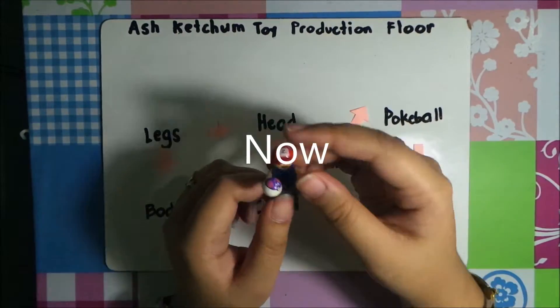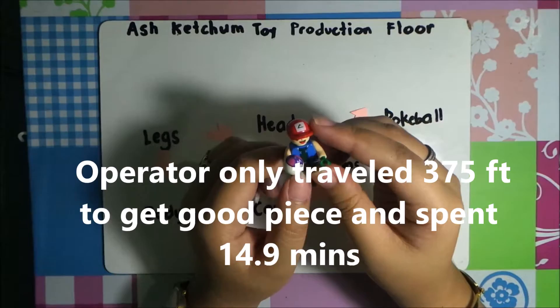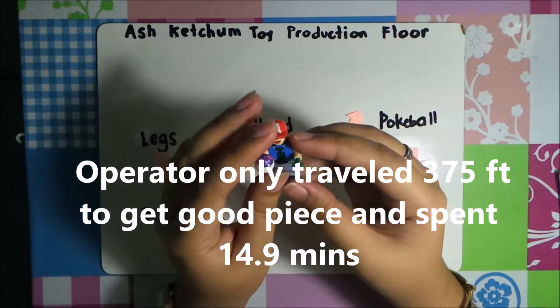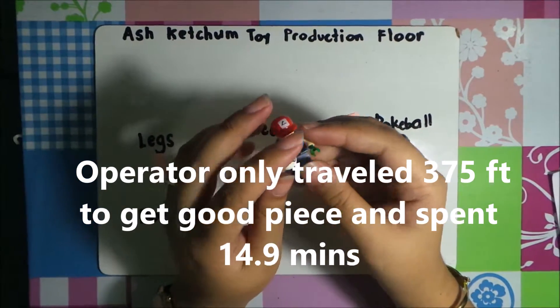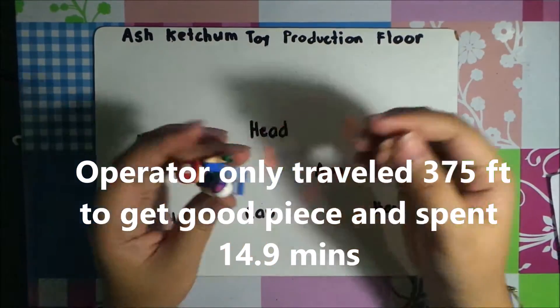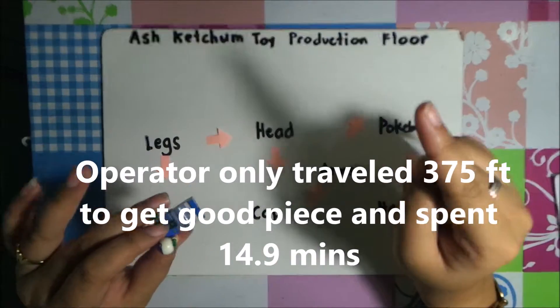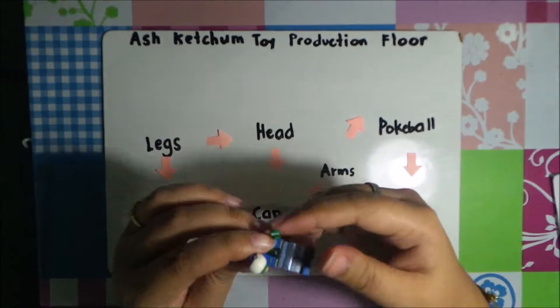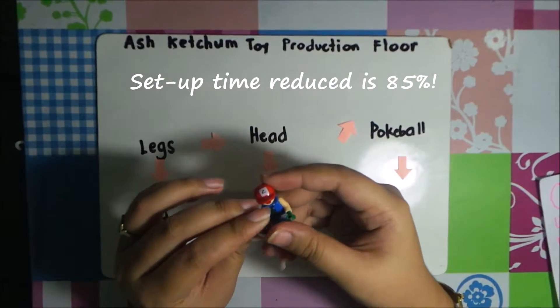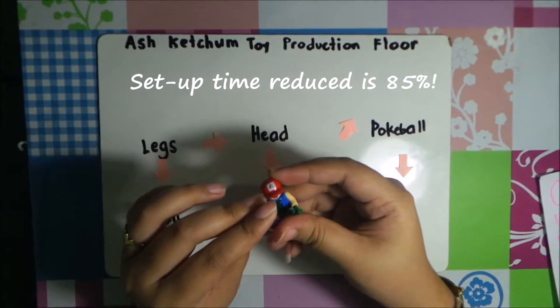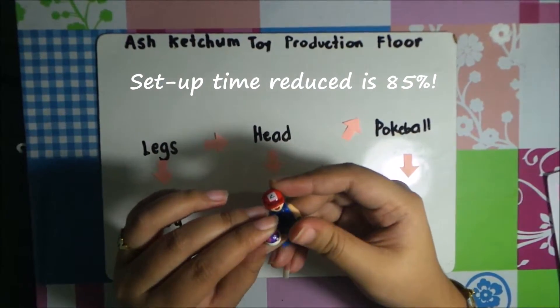Now the operator only traveled 375 feet to get the first good piece, and spent only 14.9 minutes. The setup time reduced is 85%.